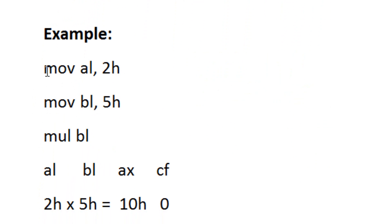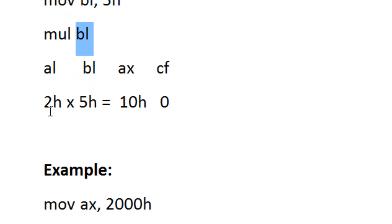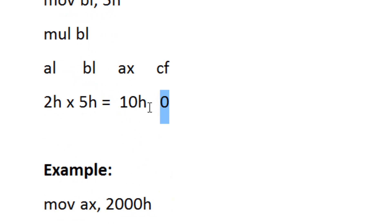Let me show you this example. We're going to move into AL, 2H, then move into BL, 5H. So with the MUL instruction we type MUL, hit space, and type in our operand we want to multiply, which is BL. It's automatically going to look for whatever is in AL and multiply it with BL. So 2H times 5H equals 10H, and the results get stored in AX. The carry flag is not set because there was no overflow.